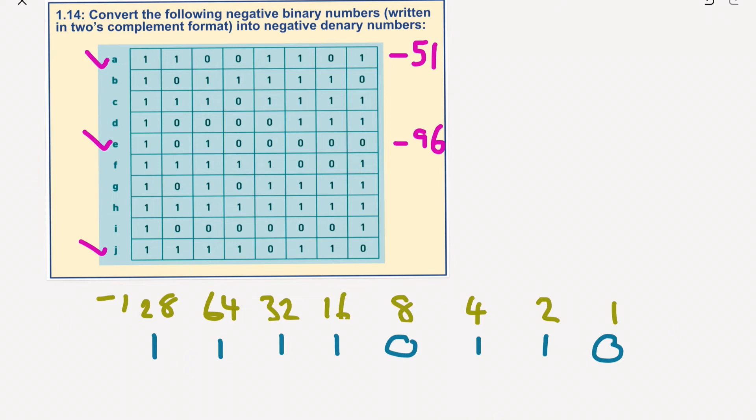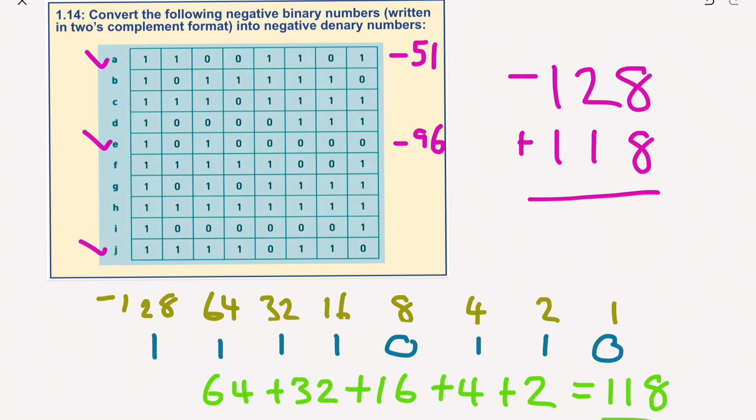I'll just wait for the plane to stop flying over. So looking at this, minus 128 plus 118 would give us a total of minus 10.